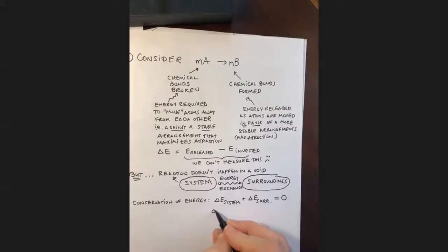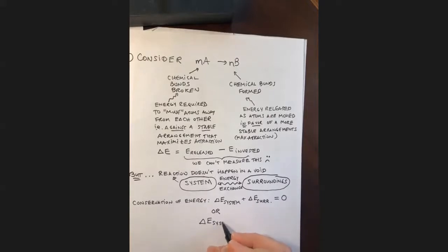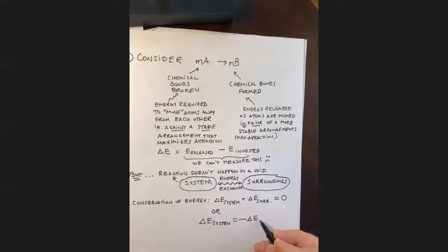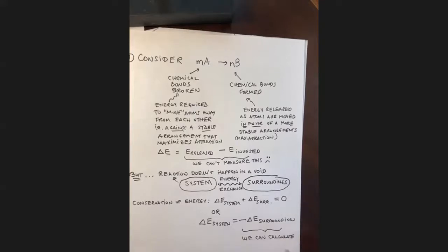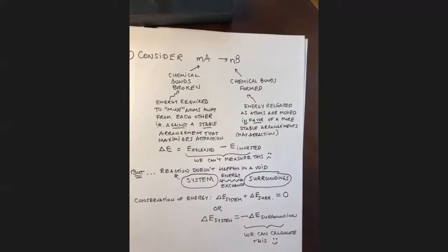Whatever energy my system gives away, the surroundings must get it — there can be no net change of energy in the universe. The energy change for my system equals the negative of the energy change in the surroundings. The key to thermodynamics is that we can actually calculate this: if I know what is the energy change in my surroundings, I know that the energy change in my system has the same value, just the opposite sign.